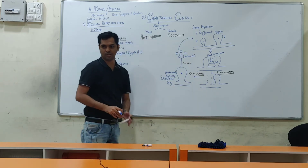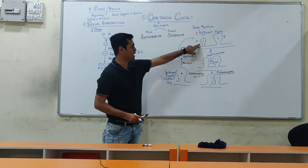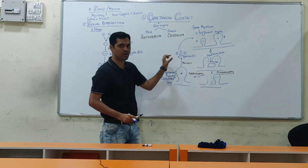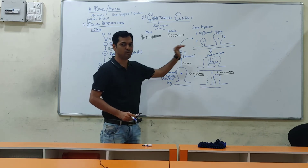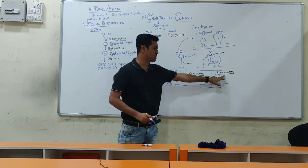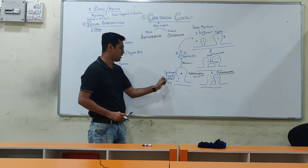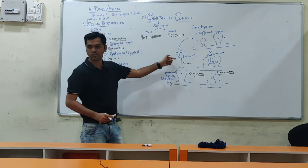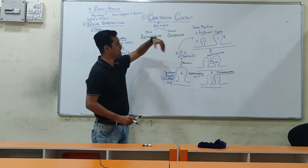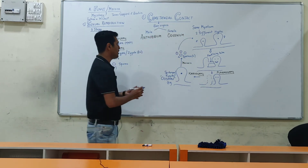These four spores are haploid, and the oospore is diploid. These four spores are then released from inside the oogonium, and they germinate to form new mycelium. In that same mycelium, two hyphae develop — one into the male gametangia (antheridium) and the other into the female gametangia (oogonium) — and the life cycle continues.